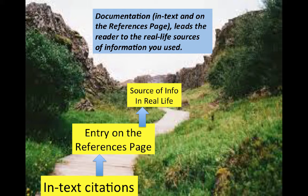The purpose of citing in the text is to allow the readers of your paper to locate the source of your information in a reference on the references page. Each in-text citation must correspond with an entry on the reference page, and that entry then leads the reader to a specific source of information — the published one you used in real life for your research.